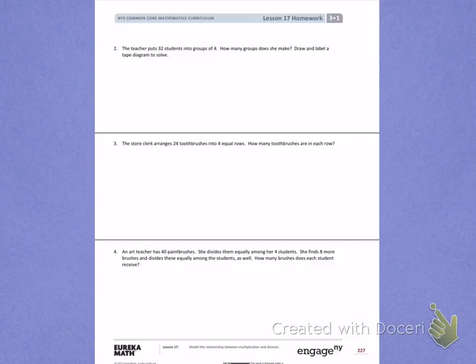Number 2. The teacher puts 32 students into groups of 4. How many groups does she make? Draw and label a tape diagram to solve. I see that this teacher has 32 students. That tells me she has a total of 32 students. Next, she's putting those students into groups of 4. When I read that, I know she's not putting them into 4 groups, but groups of 4, which means my size is going to be 4. If I know my total, then I must be creating a division problem.